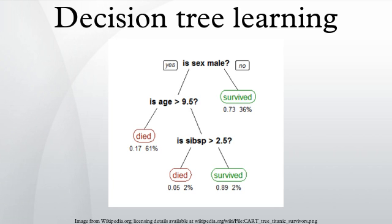Gini impurity reaches its minimum when all cases in the node fall into a single target category. To compute Gini impurity for a set of items, suppose i takes on values in a set, and let the fraction of items labeled with value i in the set be given. Information gain, used by the ID3, C4.5 and C5.0 tree generation algorithms, is based on the concept of entropy from information theory.